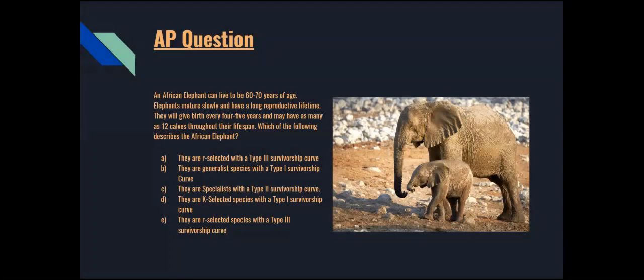Let's see if you can answer an AP question. We have the African elephant here. It can live to be 60 or 70 years of age, matures slowly, and has a long reproductive lifetime. It gives birth every 4 to 5 years and may have as many as 12 calves throughout its lifespan. Which of the following describes the African elephant? Hopefully you were able to get this: elephants live for a long time and only give birth to a few offspring at once, so they are K-selected. They take care of their offspring because they mature slowly, making them a type 1 survivorship curve. An elephant is not likely to die when it's young, but will die when it reaches its mature age.